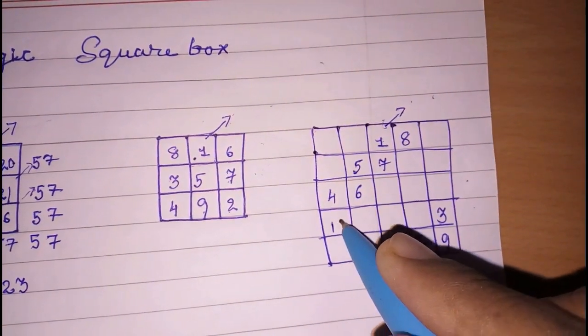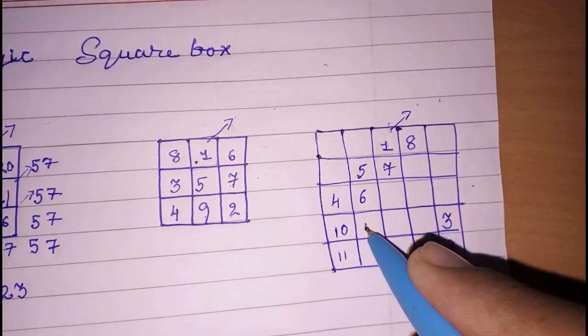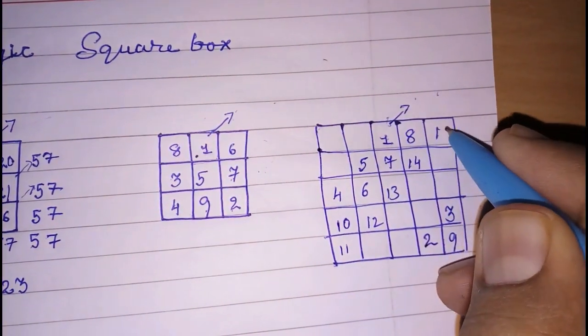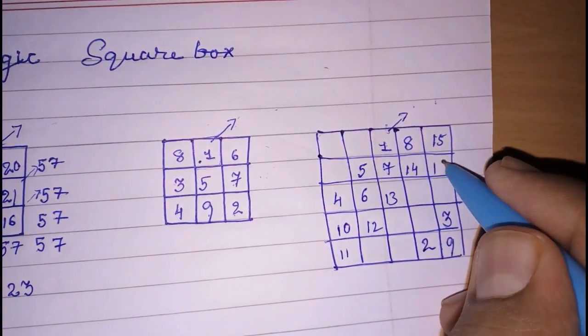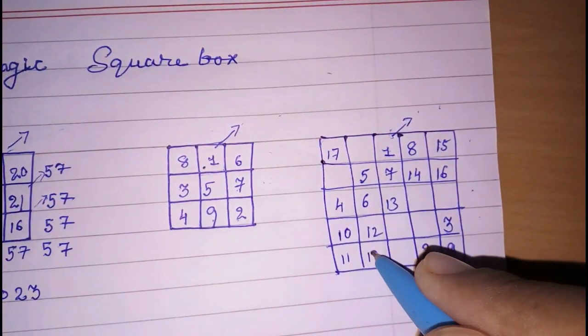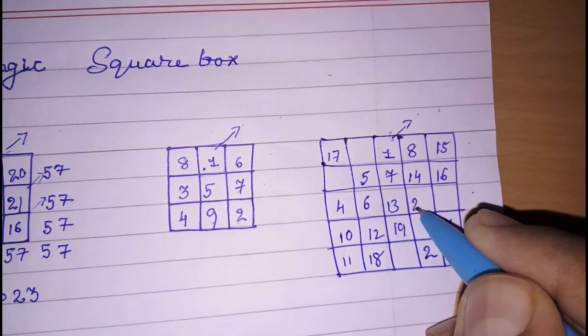Here it will come, 10, again, so 11, 12, 13, 14, and 15, no box here, so 16, again this way, 17, 18, 19, 20.